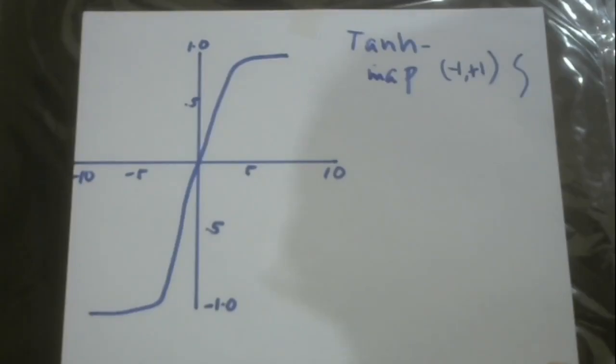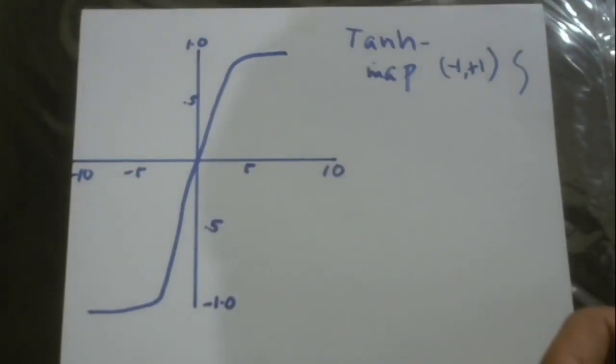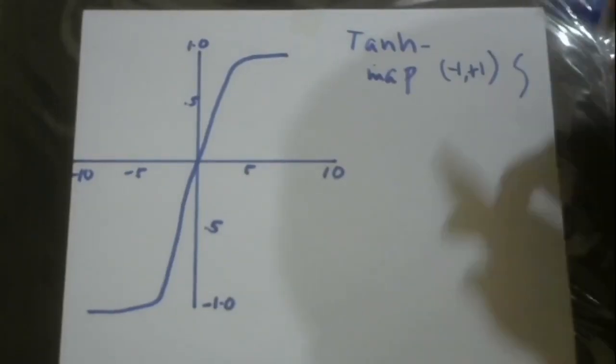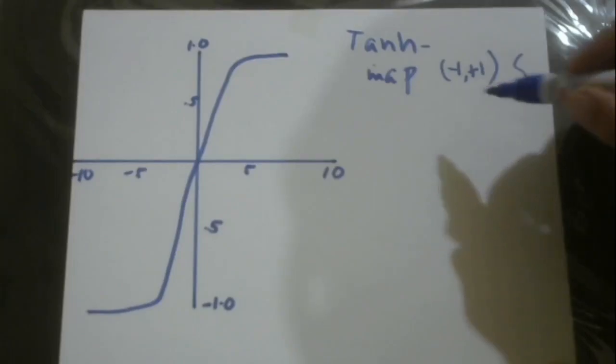Tanh can be said to be a variation of sigmoid, but what makes it very different, apart from the range, is that it is centered at zero.